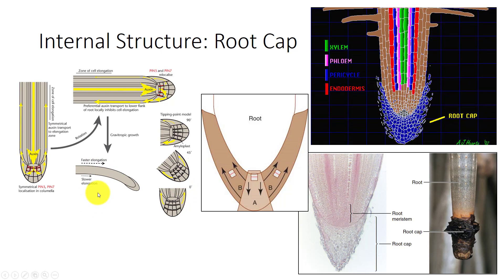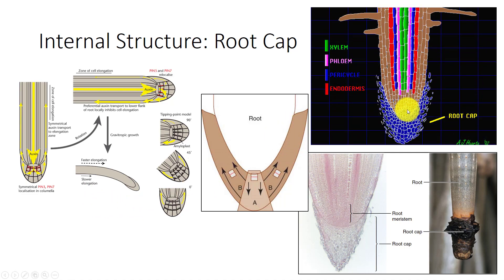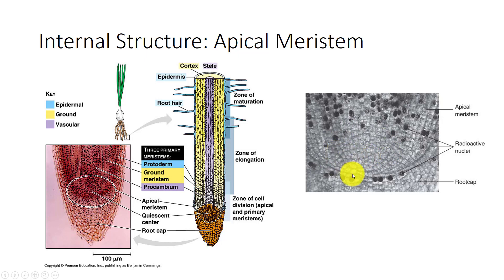Close to the edge of the cap, the cell's dictyosomes secrete mucigel. The middle lamella breaks down and releases the cells. It has been estimated that only four or five days pass from cell formation in the root cap to its sloughing off, so it is always regenerating itself. If the root apical meristem is examined in relationship to the root tissues it produces, regular files of cells can be seen to originate in the meristem. There is a mitotically inactive central region known as the quiescence center, indicated by roots grown in a solution with a radioactive precursor of DNA showing where the action is. It can replace the apical meristem if it becomes damaged.